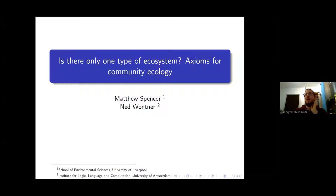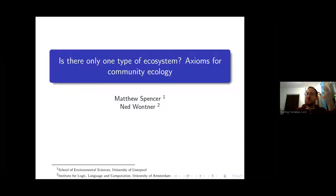I just have to share a story about this. I think it was 2015 when I got a paper to review by a certain Matthew Spencer about measuring relative abundance change in communities. When I got it to hand, I thought, what is there to discuss about relative abundance change in communities? But when I reviewed the paper, I came away thinking: how come we never thought about all the depth that there is to measuring relative abundance change in communities? It was again a very axiomatic approach. I highly recommend that paper — it's published.